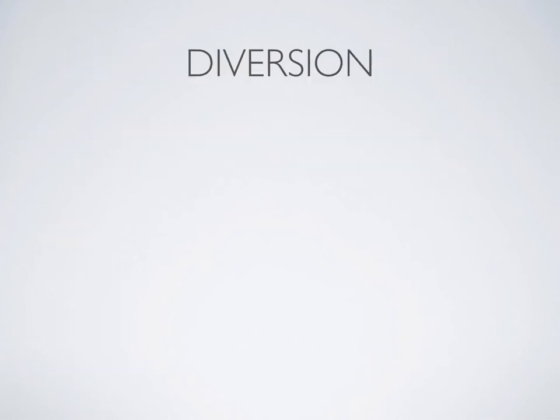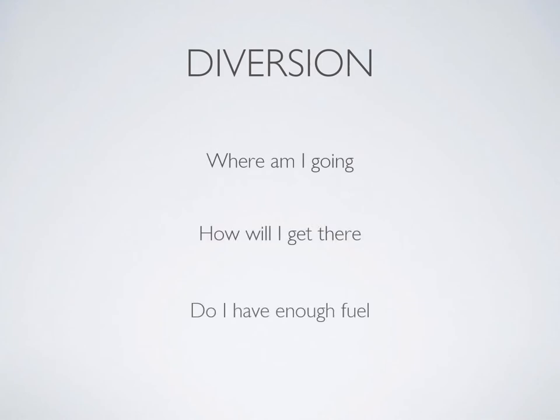We actually make diversions all the time. Sometimes the weather for training isn't what we expect, and the decision we make is simply to divert back to the home airport. Nevertheless, the mental process should be the same. In its simplest form, a diversion comes down to three questions: Where am I going? How will I get there? And do I have enough fuel? If you can answer these three questions, then you essentially have your diversion.